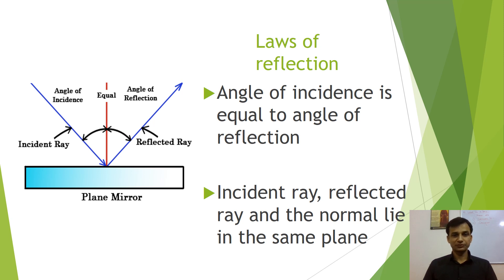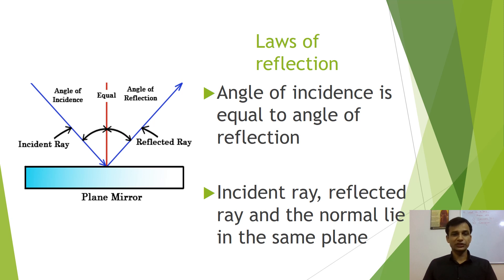The incident ray is moving towards the mirror, the reflected ray is moving away from the mirror, and the normal is perpendicular to the surface of the mirror where the rays of light are falling. Now, what is the law of reflection? There are two laws of reflection. First: the angle of incidence formed by the incident ray and the normal is always equal to the angle of reflection formed by the reflected ray and the normal — in simple terms, angle of incidence equals angle of reflection.